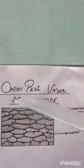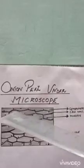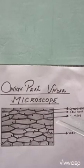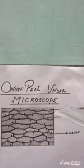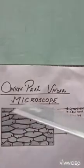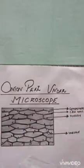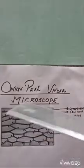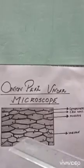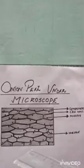This is the structure of the onion peel under the microscope. We get to see the cell wall, the nucleus, the cytoplasm, and the vacuoles. We also see that all the cells are very tightly packed without any intercellular spaces.